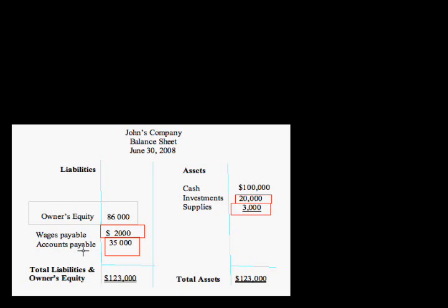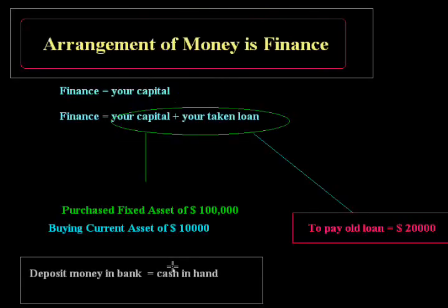He also has an amount payable to people. This is also a source of finance because you are getting services from labor and you did not pay them, so it is a source of finance. After matching, your balance sheet must be balanced. Now you understand what finance is.